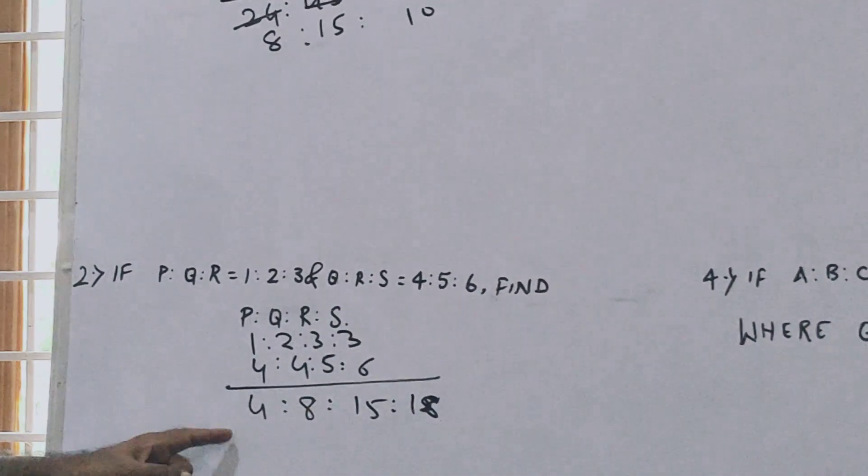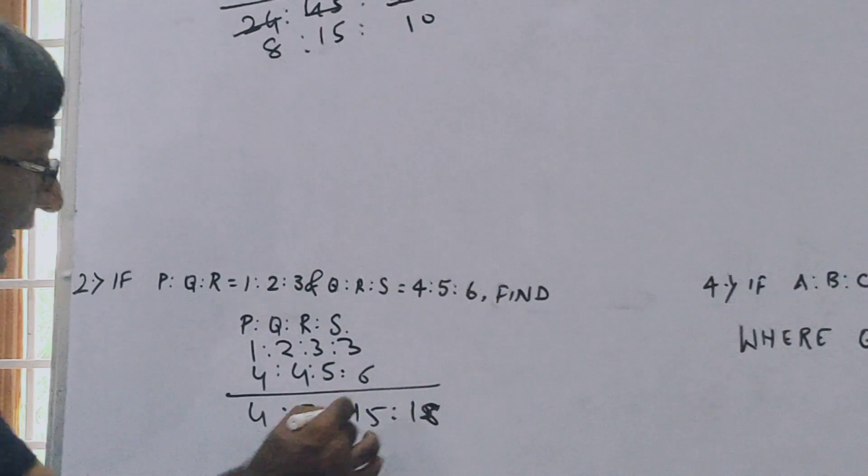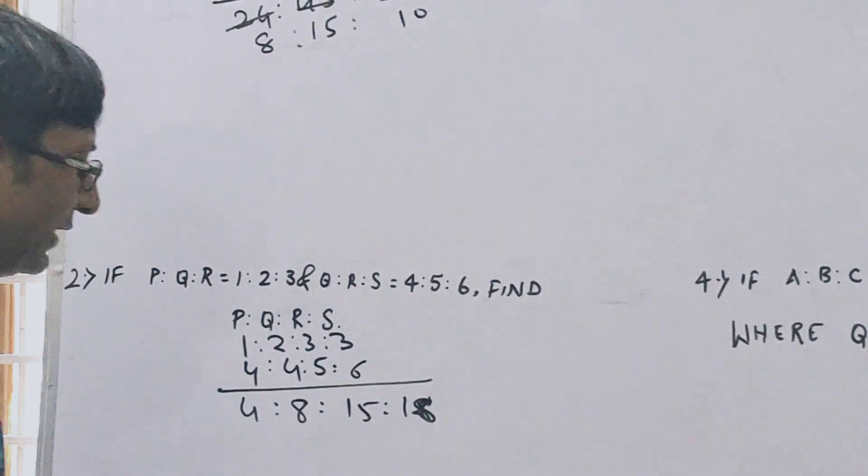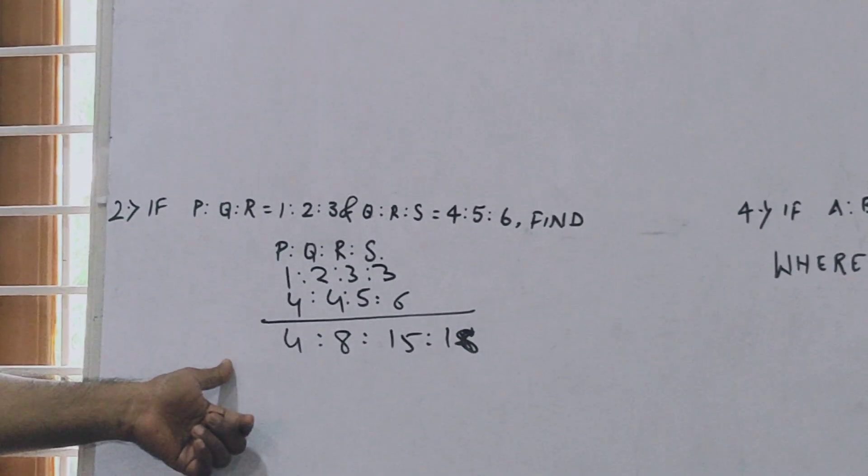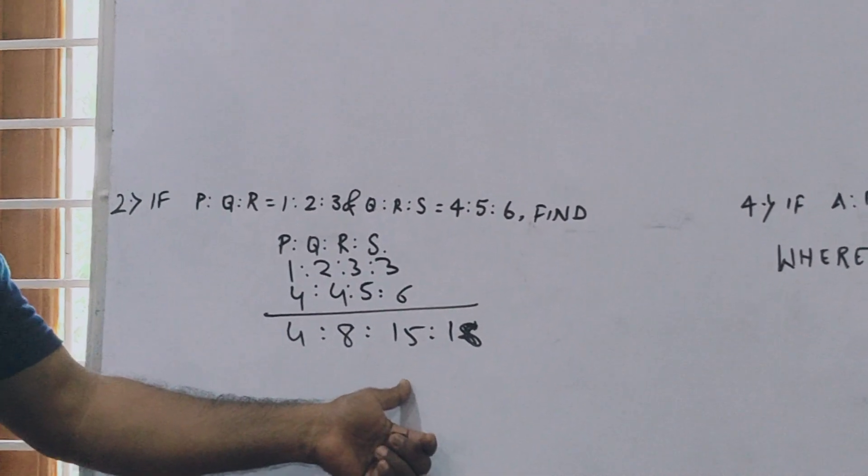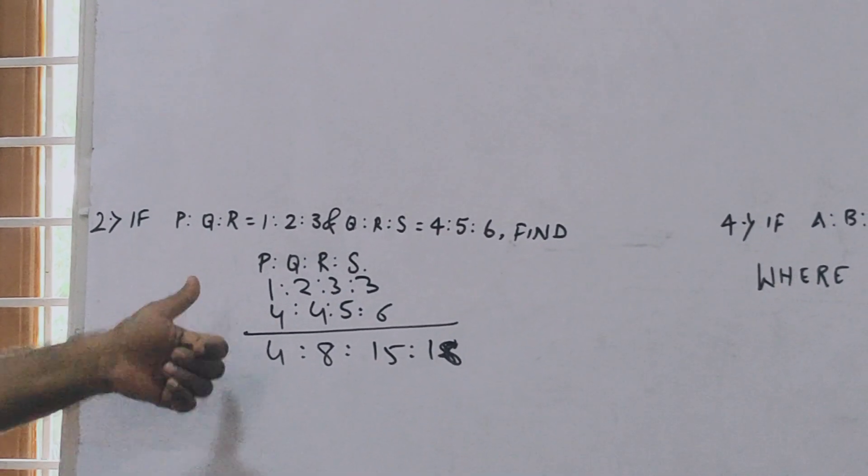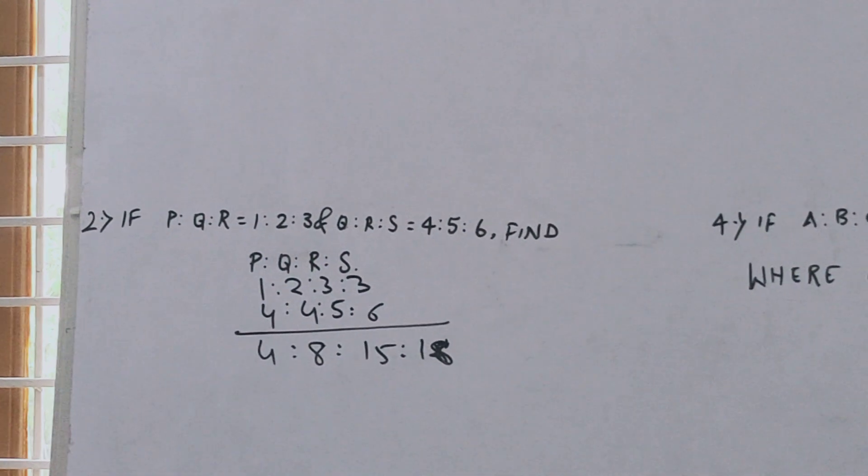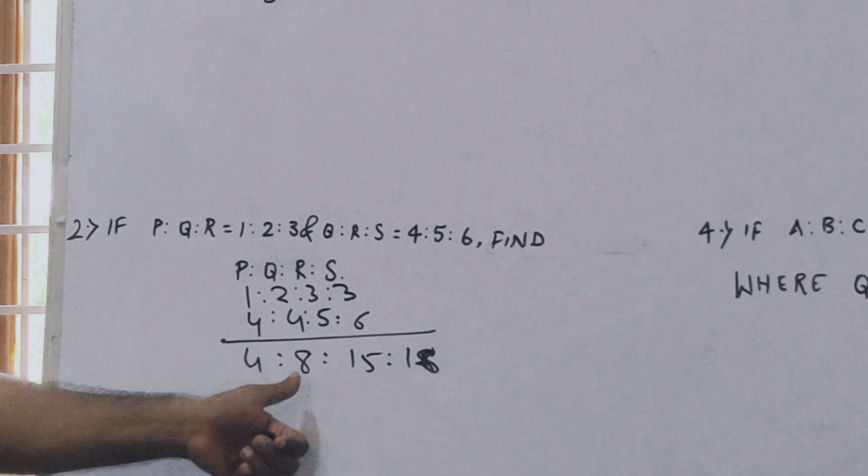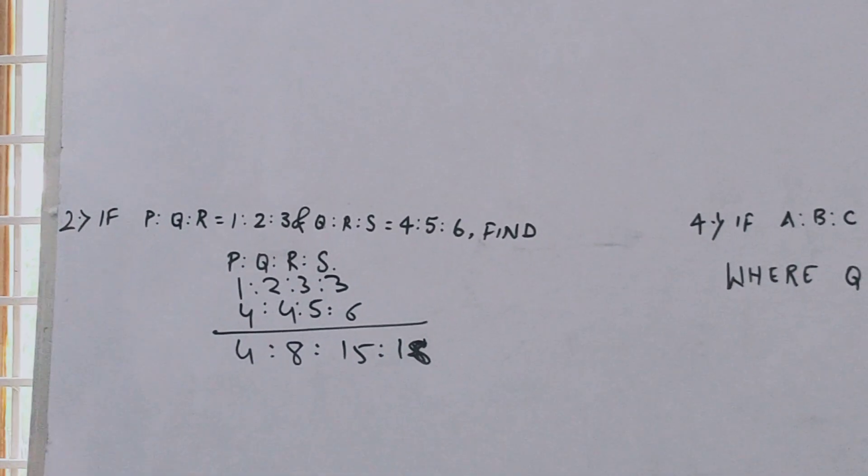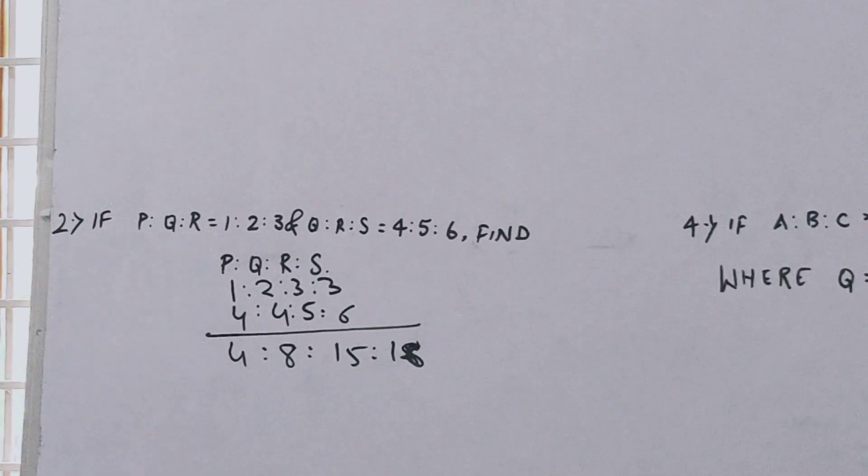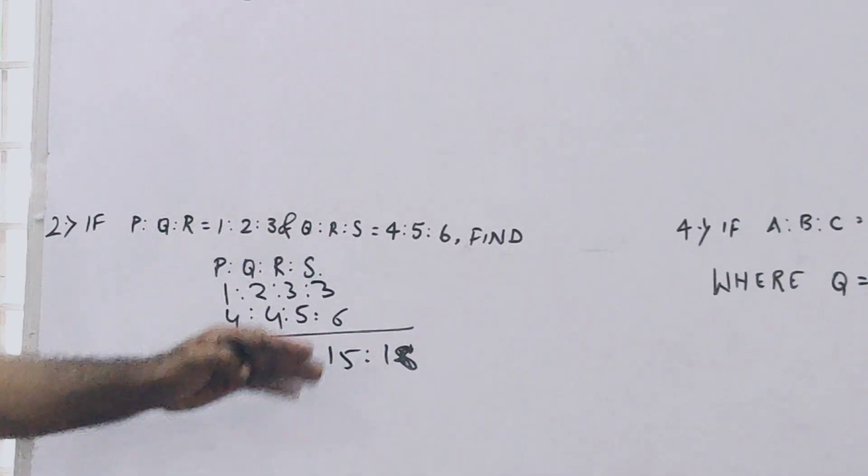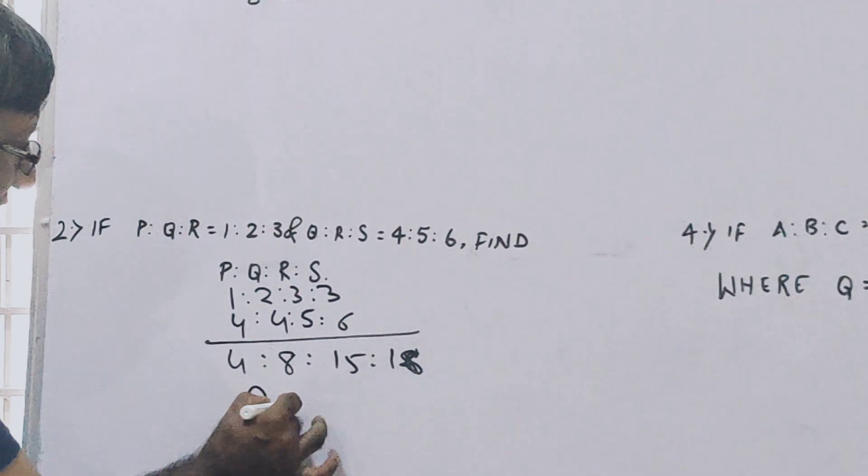So now 4, 8, 15, and 18. There is not any common factor in all these four, so this is the final answer. P ratio Q ratio R ratio S is 4 ratio 8 ratio 15 ratio 18.